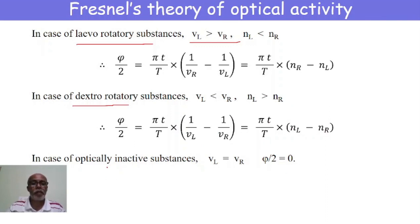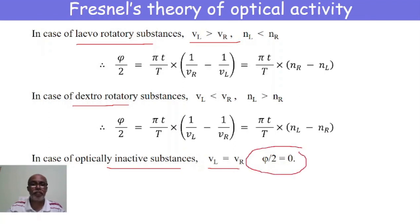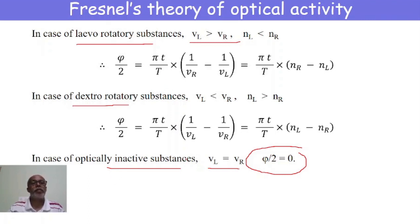If the substance is optically inactive, then v_L = v_R, and in that case φ/2 = 0 — there is no phase difference and no rotation. Since there is no phase difference, there is no splitting. Both rays travel with the same speed. For a phase difference to arise, the rays must travel with different speeds, which requires the substance to be optically active. This concludes Fresnel's theory of optical activity.